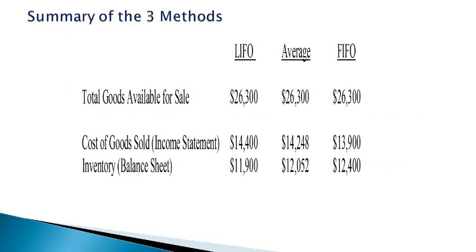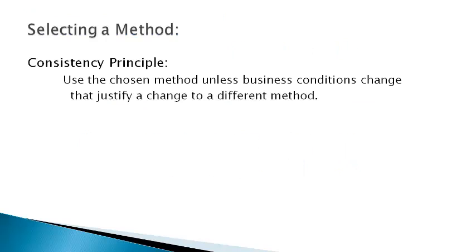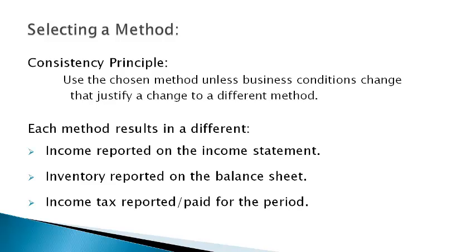The total value of goods available for sale is the same for each method. Each method results in a different value of cost of goods sold and a different value of inventory reported on the financial statements. The accountant estimates the reported amounts based on the method selected because the actual amount is not known. Selecting a method to value inventory is a critical decision. Once a method is selected, the company must continue to account for inventory using the chosen method unless business conditions change to justify a switch. Each method gives a different amount of income and value of inventory reported for the period.